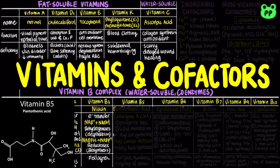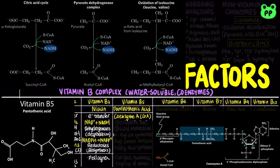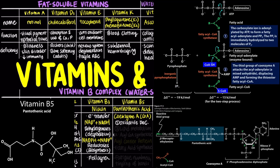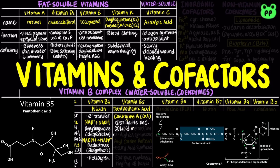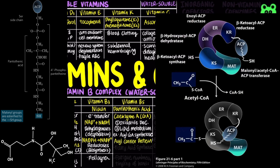Vitamin B5, also known as pantothenic acid, is a precursor to coenzyme A, abbreviated as CoA. Coenzyme A functions as an acyl group carrier, transporting carbon atoms during oxidative decarboxylation reactions catalyzed by pyruvate dehydrogenase, alpha-ketoglutarate dehydrogenase, and branched-chain amino acid dehydrogenase. Coenzyme A may also function as an acyl group carrier for acyl-CoA synthetase during beta-oxidation of fatty acids.